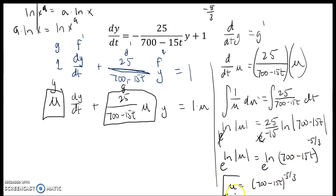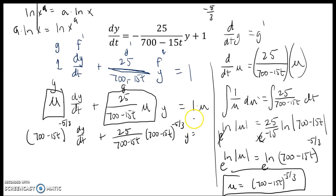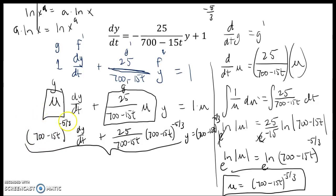Now I have my integrating factor μ, so I can come back and put that in. I have 700 minus 15t to the negative 5 thirds times dy/dt, plus 25 over 700 minus 15t times μ — which is 700 minus 15t to the negative 5 thirds — times y, equals 1 times 700 minus 15t to the negative 5 thirds. Now I can condense this part back into the product rule. I can visually verify that if I take the derivative I do, in fact, get this quantity. We have correctly found g so that g prime is what we have left over here.